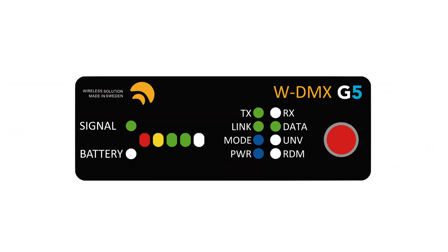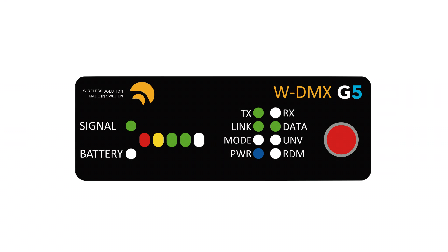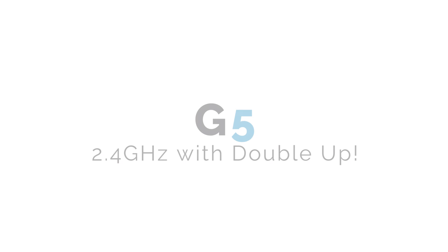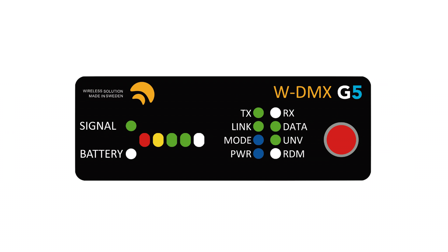In G5 mode at 5.2 gigahertz, the mode LED blinks blue quicker. In G5 double up mode at 2.4 gigahertz, the mode LED appears static blue and the universe LED appears static green.